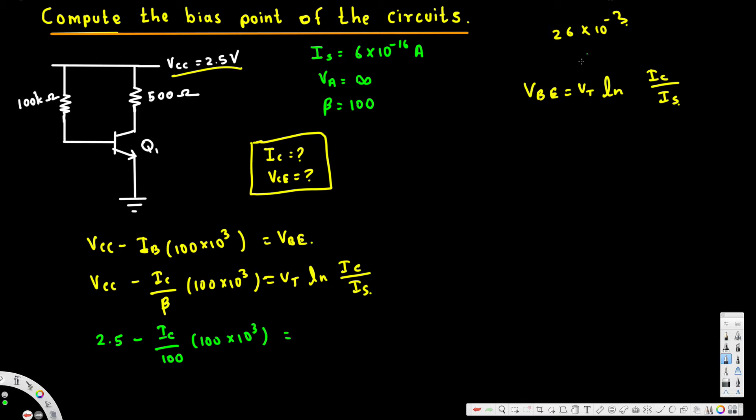And then Vt is equal to 26 times 10 to the power of minus 3, ln Ic over Is. Is is 6 times 10 to the power of minus 16 ampere.